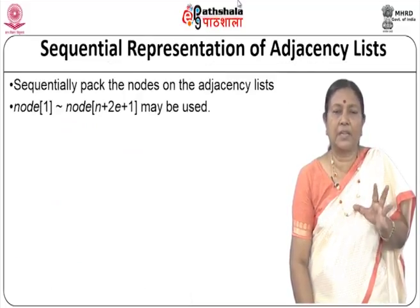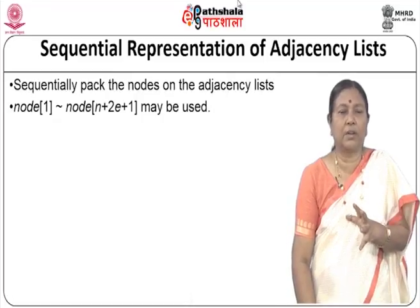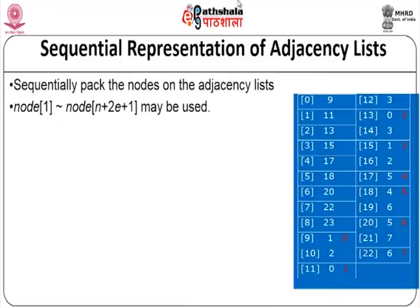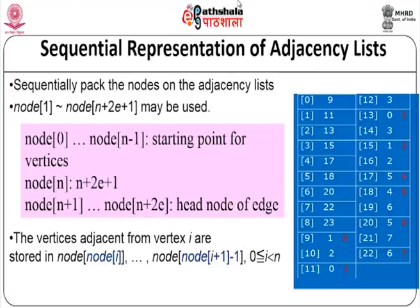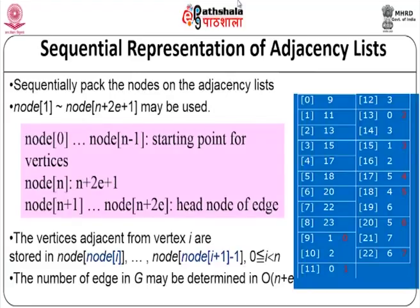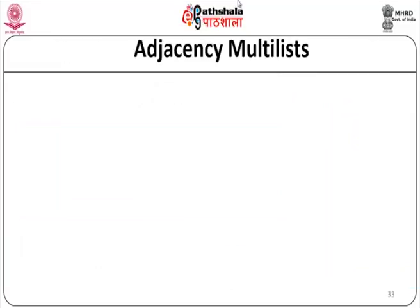A sequential representation of the adjacency list is also possible by sequentially packing the nodes. Nodes 1 to n-1 give the starting point of vertices, node n equals n + 2e + 1, and nodes n+1 to n+2e are the head nodes of each edge. Vertices adjacent to vertex i are stored from node[i] to node[i+1]-1. Normally, adjacency lists use a linked list representation.